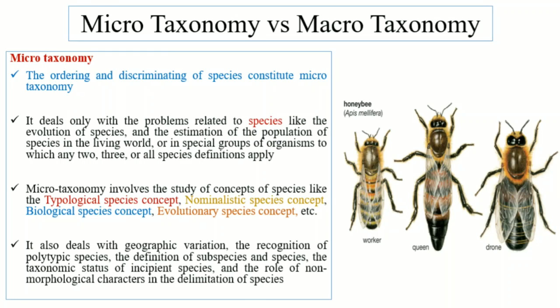In microtaxonomy, we deal with the identification and classification. It deals only with the problems that are related to the species. We discuss the evolution of the species, the estimation of the population of the species in the living world — where is it, what is it, what is the geographic distribution. This is basically Microtaxonomy.